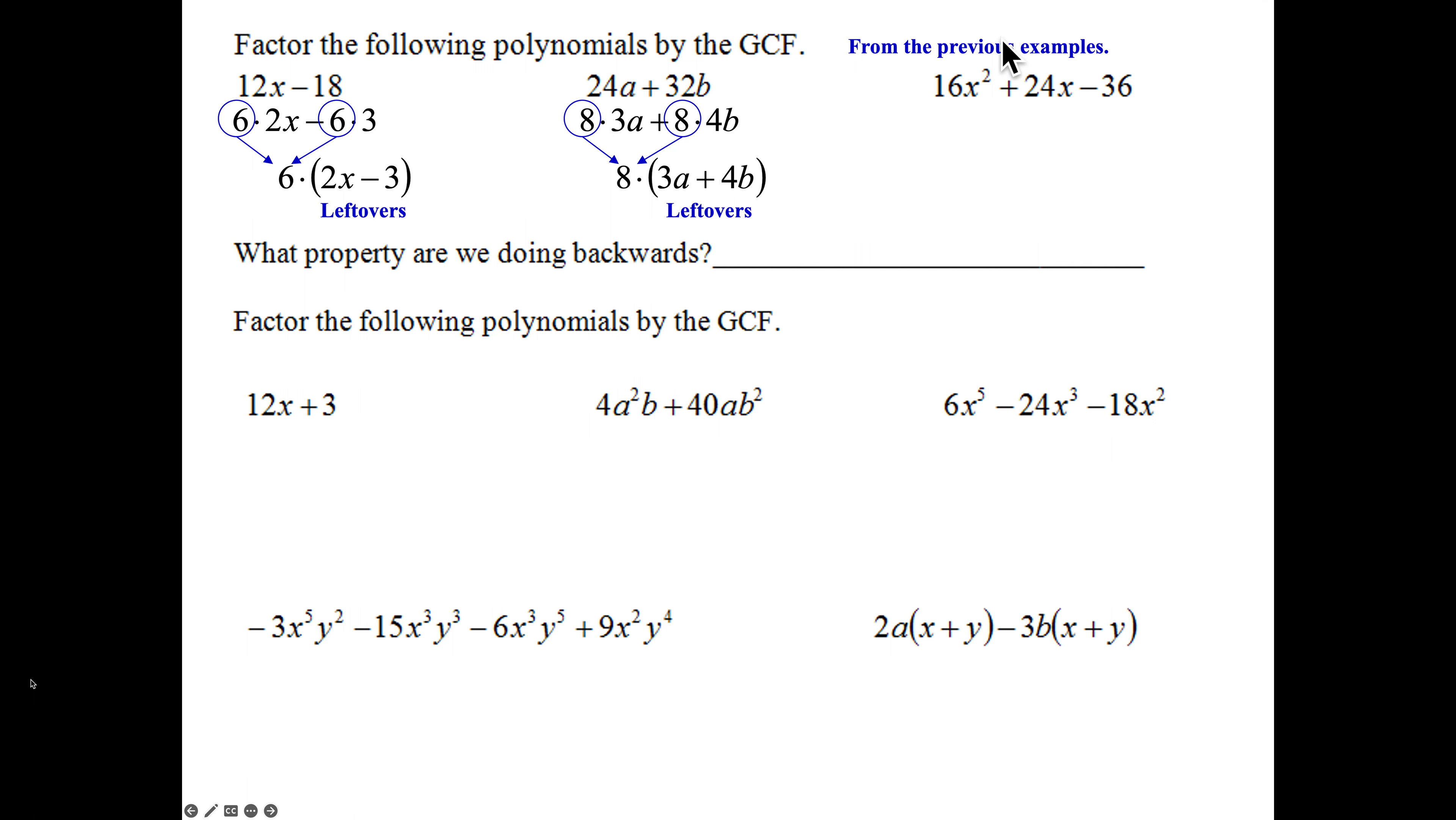Here, we said our GCF between 16, 24, and 36 was 4. Break them apart. 4 times 4x² plus 4 times 6x minus 4 times 9. 4s go to the front. Leftovers in the parentheses. 4x² plus 6x minus 9. Those are my leftovers.